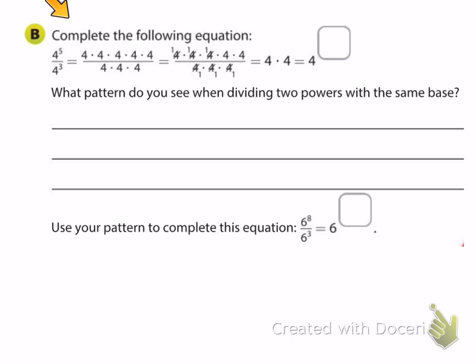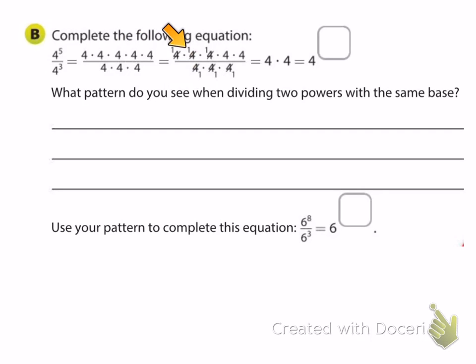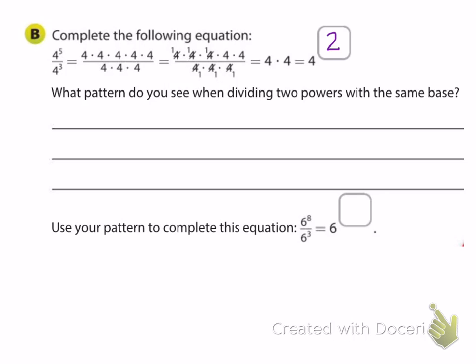If we write it all out, we've got four used as a factor five times in the numerator and three times in the denominator. We can cancel — four divided by four is one, and we can do that three times. What are we left with? Just four times four. So that would be four squared. We've completed the equation: four to the fifth divided by four to the third equals four squared.